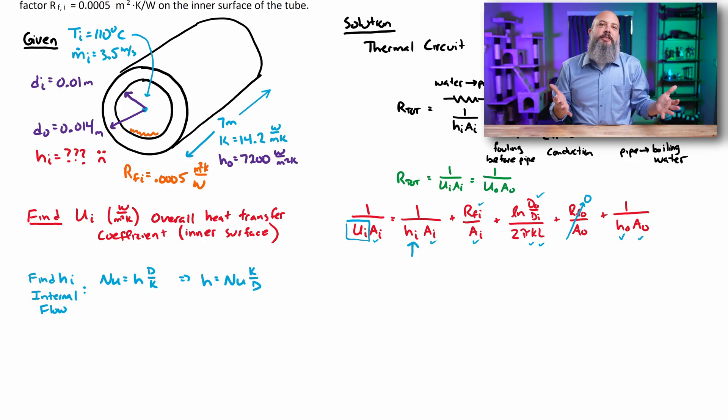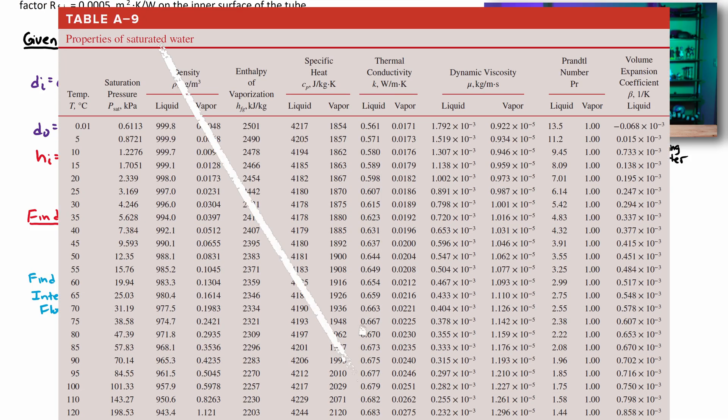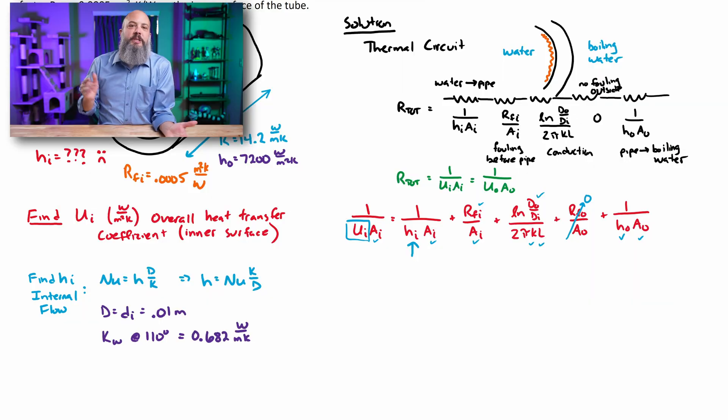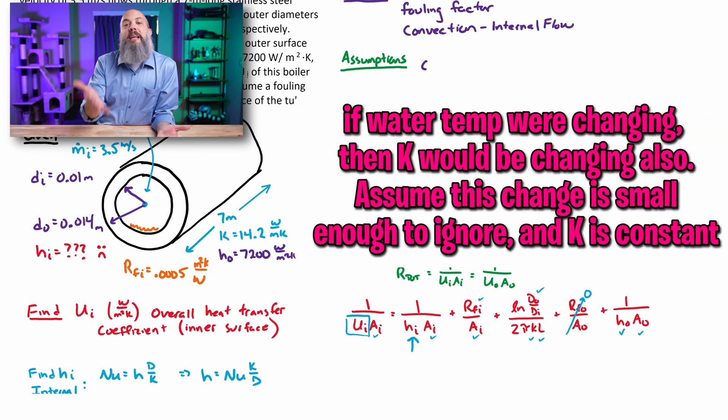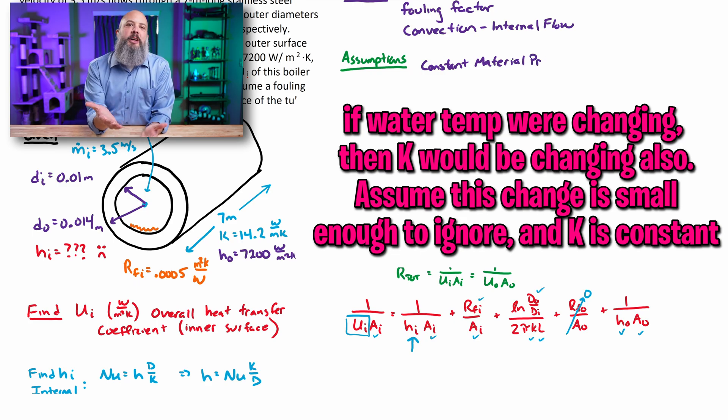The value D is the 0.01 meters that we're given, the inner diameter. The value for K, we will have to look this up. This value for K is going to be for the water on the inside of the pipe. And so if I look this up at 110 degrees, this is going to be a value of 0.682 watts per meter Kelvin, which is K at the bulk temperature for the water on the inside.